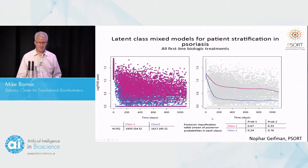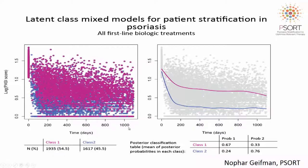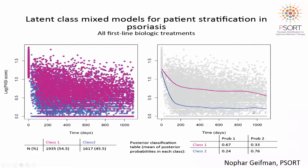After applying a latent class model, we got something out that looked like this. We have a classifier so we can, with some confidence, predict which class a patient is likely to be placed in — we can actually have a confidence call on that, saying they're 85% likely to be in class one or class two. We can see we have one class, class one, where patients improve a bit but then plateau, and another class where they improve quickly and then plateau at a well-managed state.